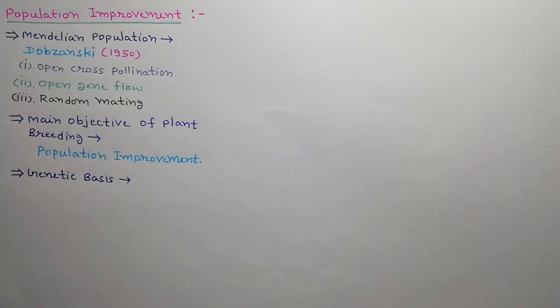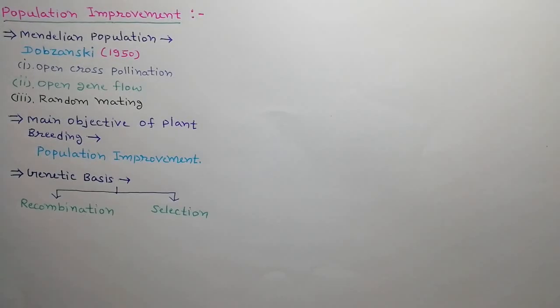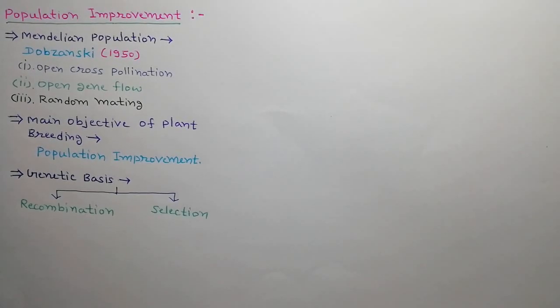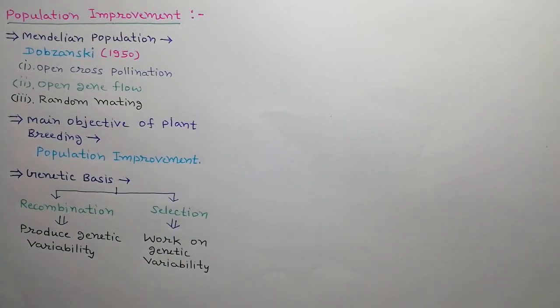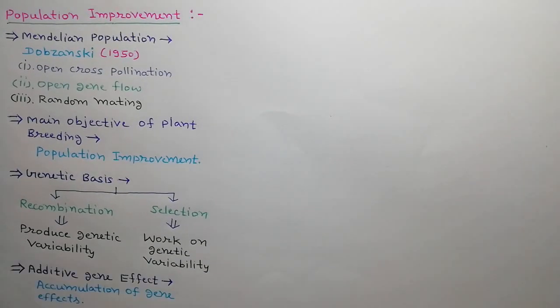What is the genetic basis of population improvement? There are two main methods of population improvement: recombination and selection. Recombination produces genetic variability, which is the natural product of cross-pollination. Selection works on genetic variability. Population improvement is based upon the use of additive gene effects. By continuous accumulation of these effects, population gets improved.